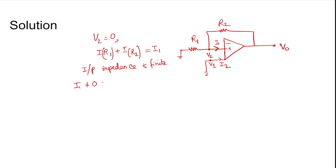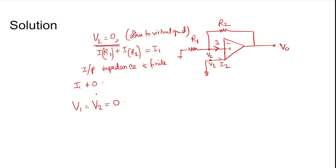Since input impedance is finite, I1 exists. Due to virtual short, or virtual ground, V2 equals zero — since V1 is grounded, V1 equals V2 equals zero. Because V2 is zero, the current through R1 is zero.